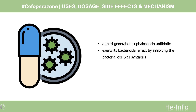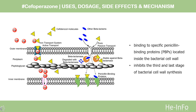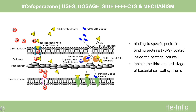Cefoperazone is a third-generation cephalosporin antibiotic that exerts its bactericidal effect by inhibiting bacterial cell wall synthesis. Like all beta-lactam antibiotics, cefoperazone binds to specific penicillin-binding proteins (PBPs) located inside the bacterial cell wall, causing inhibition of the third and last stage of bacterial cell wall synthesis. Cell lysis is then mediated by bacterial cell wall autolytic enzymes such as autolysins.